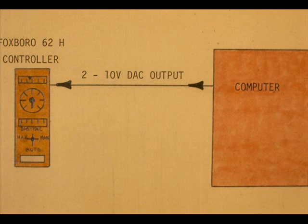The computer output, called the DAC output, is a 2 to 10 volt signal for this particular Foxborough system. It is the third computer signal.